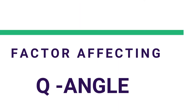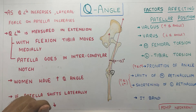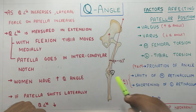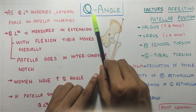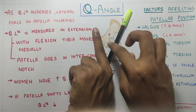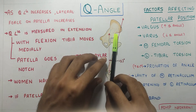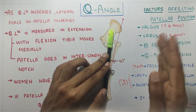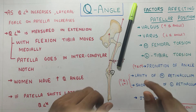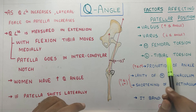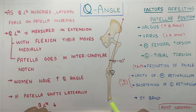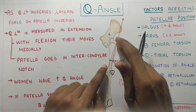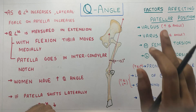Certain factors affect patellar position and in turn the Q angle. First, excessive knee valgus increases the Q angle because the tibia shifts outward, increasing the angle between the two lines. In knee varus, the Q angle is reduced. In medial femoral torsion, the femur rotates medially, and in lateral tibial torsion the tibia rotates laterally — both increase Q angle. Pronation of the ankle, causing collapse of the medial arch, increases valgus and therefore also increases Q angle.